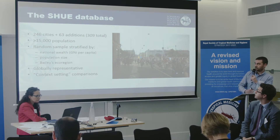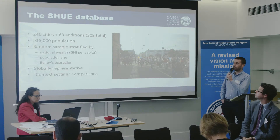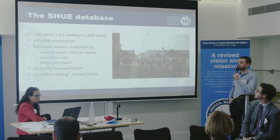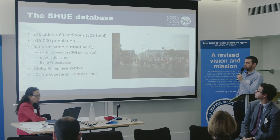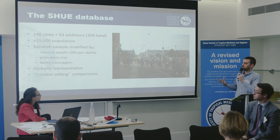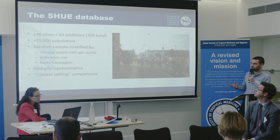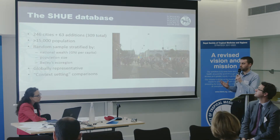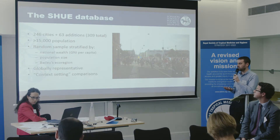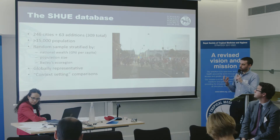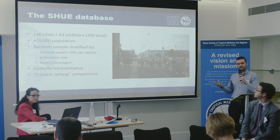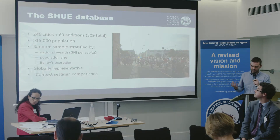The SHU database consists of data on 246 randomly selected cities and a further 63 cities chosen for some reason of interest — 390 total. We've defined a city broadly as any urban area with a population of greater than 15,000 people. The random sample was stratified by national wealth, population size, and eco-region, so we're trying to get something globally representative, representing smaller cities more than tends to happen in other initiatives. The idea is to use this data for context-setting comparisons, city-to-city comparisons, to understand drivers and solutions using health impact models and tools.